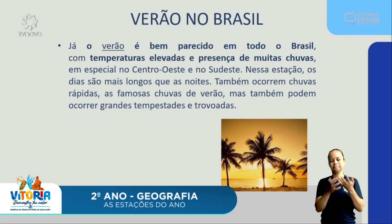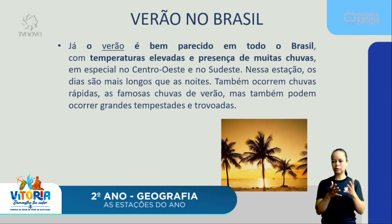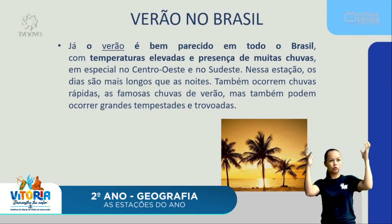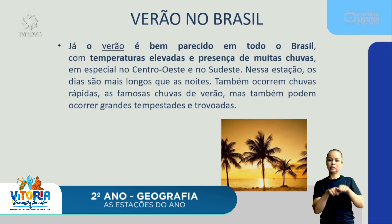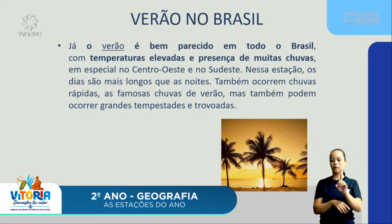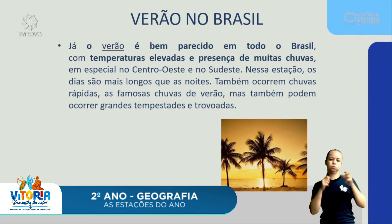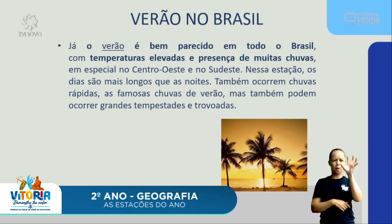O verão no Brasil é bem parecido em todo o país — quando é verão no Brasil, é verão no Brasil todo. As temperaturas são mais elevadas e chove bastante, em especial no centro-oeste e no sudeste. Os dias são mais longos que as noites, ocorrem chuvas rápidas, as famosas chuvas de verão, e também podem ocorrer grandes tempestades e trovoadas. O verão não muda muito de uma região para outra.